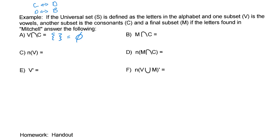V is the vowels and another subset is consonants. M is the letters found in 'Mitchell.' So the intersection of M and C — looking for all the consonants in Mitchell — M is a consonant, T is a consonant, C is a consonant, H is a consonant, and L is also a consonant. So the set for the intersection of Mitchell and consonants is {M, C, H, T, L}.